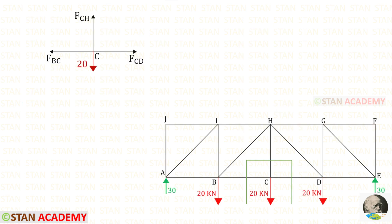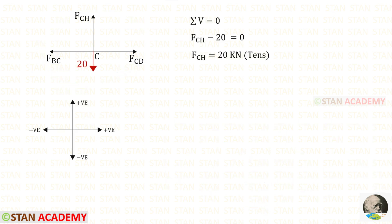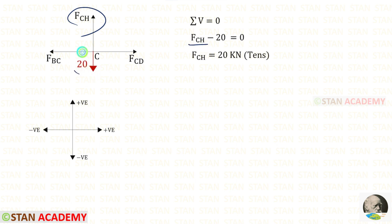Now I am going to make the fifth and final section and take that part for analysis. Applying sigma V equals zero: FCH is acting upwards so it is positive, and 20 is acting downwards so it is negative. For FCH we get 20 kilo-Newton, which is tensile.